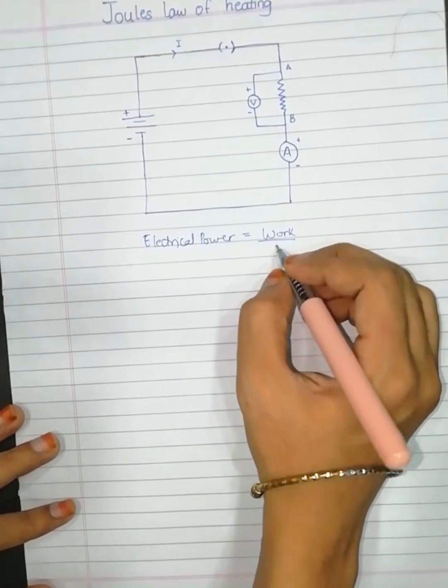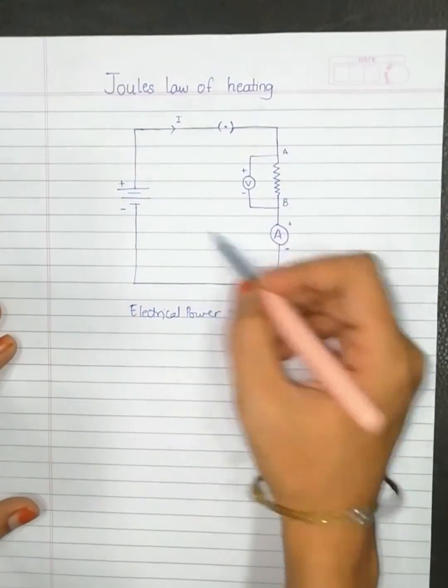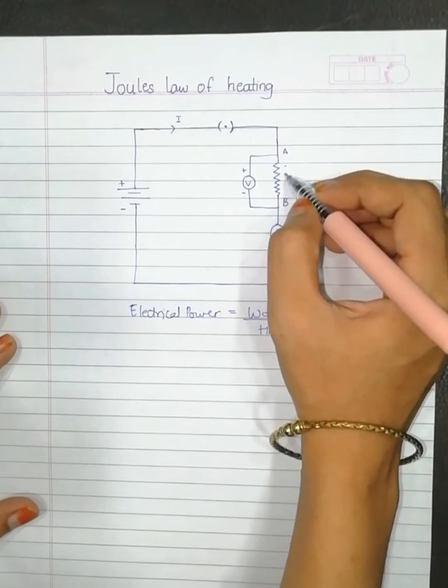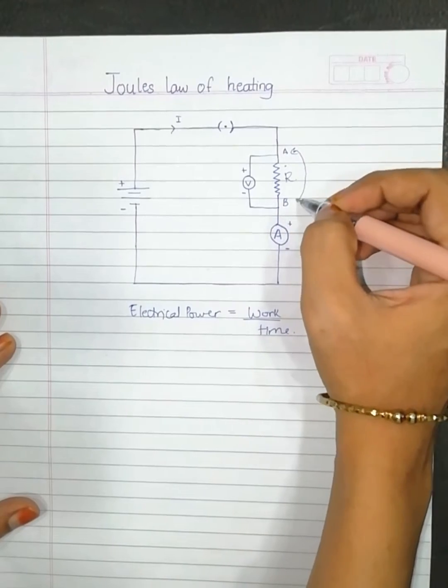So if here in this electrical circuit you will see we have a resistor R, and the work done in moving the charge from A to B.